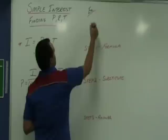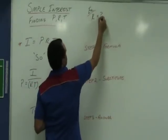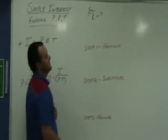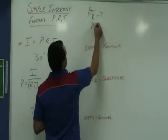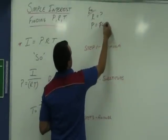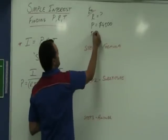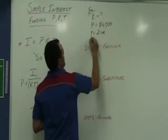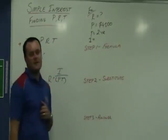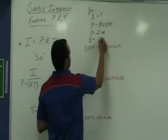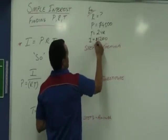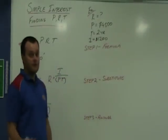What if I wanted to find the rate? What is the rate if $4,500 is invested for two years earning $1,200? What's the rate? Let's get it done.